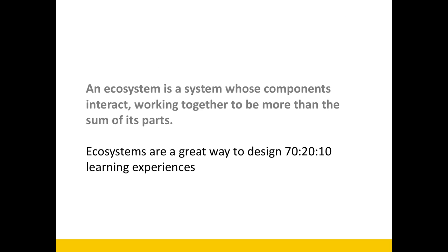At Sprout Labs, ecosystems are really about a set of components that work together — and by their relationship of working together, they become more than the sum of their parts. In the 70-20-10 learning model, it's a really powerful way to think about all three dimensions over time and in different ways.